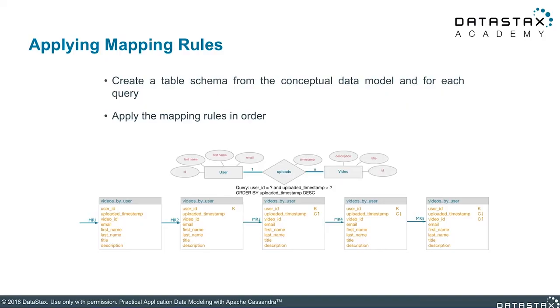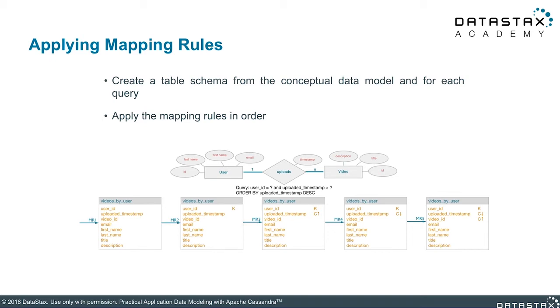We need our conceptual data model and our access patterns to create the logical data table. Here we have 'user uploads video' and the access pattern: we query on the user ID and on the uploaded timestamp, with an ordering restriction on the uploaded timestamp. Mapping rule number one: model the entities and relationships in a table. We're querying for videos uploaded by a specific user, so this entire relationship is stored in a single table — with all the attributes from user, all the attributes from video, and even the uploads attribute of timestamp.